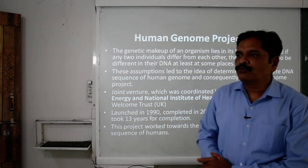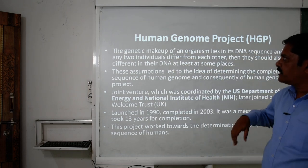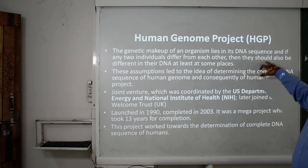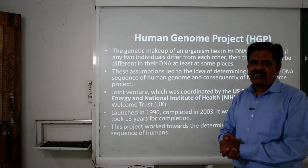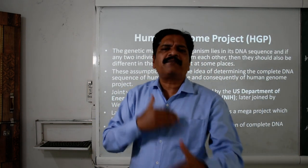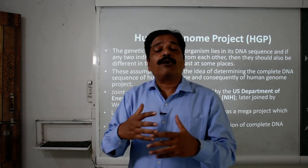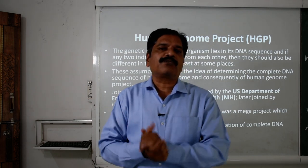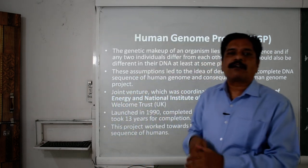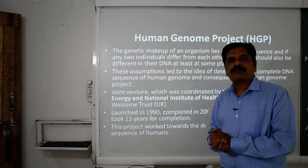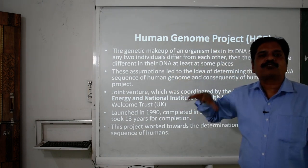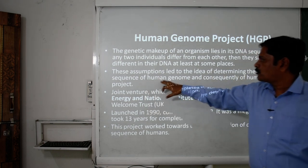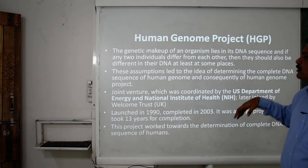First, we are going to discuss the Human Genome Project, HGP. The genetic makeup of an organism lies in its DNA sequences. If any two individuals differ from each other, they should also differ in their DNA at least at some places. It is said that nearly 99.99% of DNA sequencing is similar in all persons, but this 0.01% makes a great difference between two persons. This assumption led to the idea of determining the complete DNA sequence of the human genome.